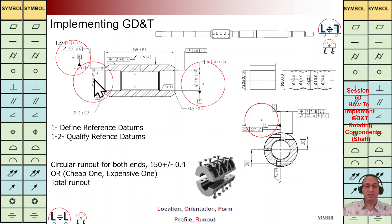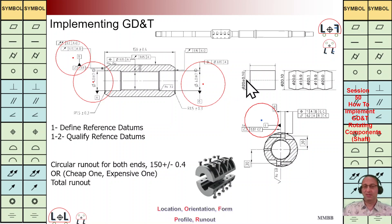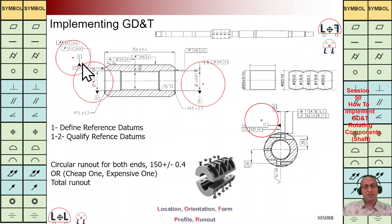In the second step we need to qualify our reference data. For example, by using this tolerance TZ we are going to qualify reference axis A, and then we qualify this axis again with tolerance H7. We have the envelope here in the ISO standard — it means this envelope is the same as maximum material condition in ASME. We have discussed this topic previously. For reference plane B, we qualify it by a flatness of 0.1.